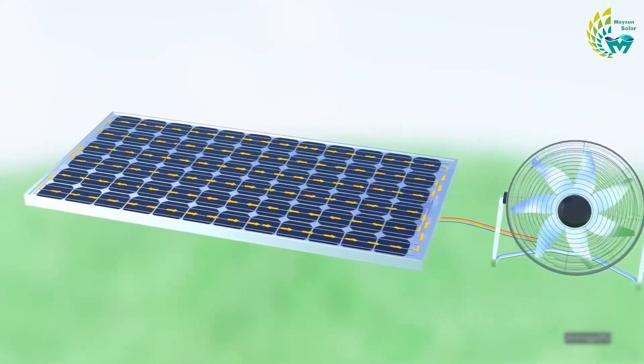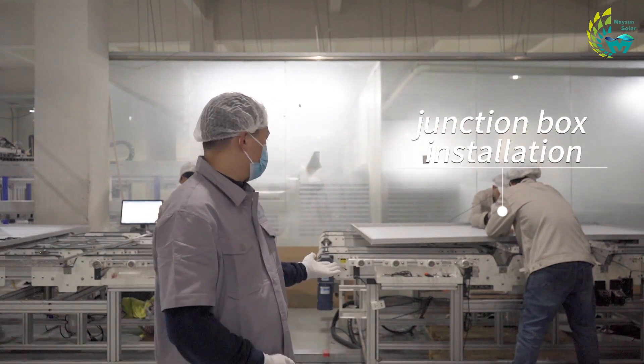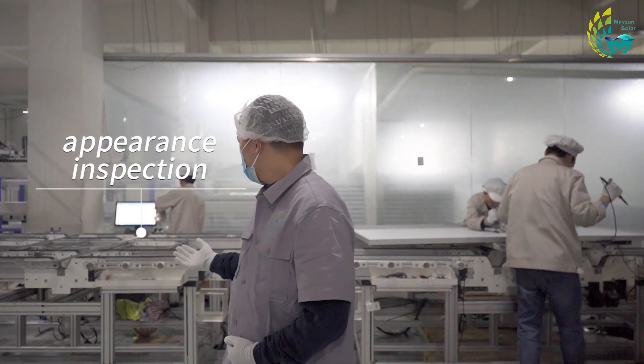How to export the DC power converted from PV modules. The process flow is roughly divided into two steps: junction box installation and appearance inspection.